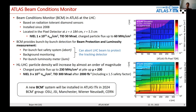The beam conditions monitor, BCM, in Atlas has been part of the experiment since 2008. It is based on radiation-tolerant diamond sensors, located in the pixel detector environment where radiation damage reaches a displacement damage equivalent of 1×10¹⁵ n-equivalent per cm² in silicon, a total ionizing dose of 50 Mrad, and a charged particle flux up to 60 MHz/cm².